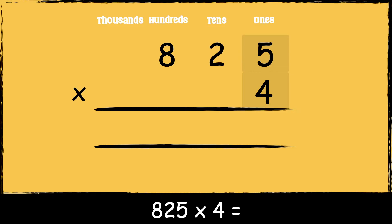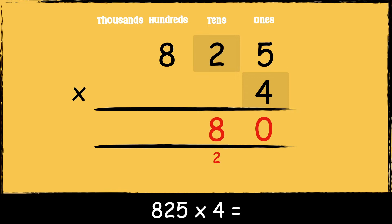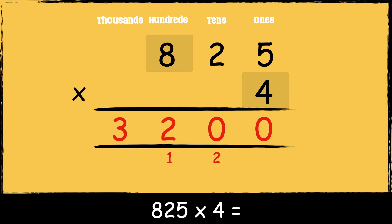First we multiply four by five: four times five is twenty. We carry the two below in the tens column as it represents two tens. Now we multiply four by two tens: four times two is eight, add the two tens gives ten. We carry the one below in the hundreds column. Then four times eight hundreds is thirty-two, add one hundred is thirty-three.